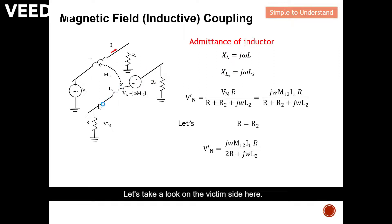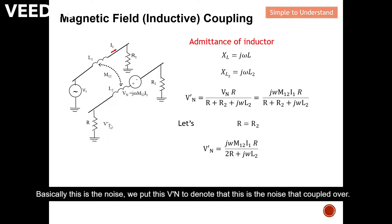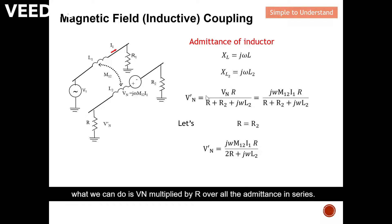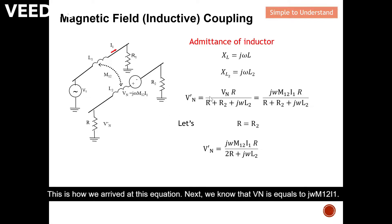Let's take a look at the victim side. This is the noise coupled over from conductor one to conductor two — we denote it V-prime-n to indicate this is the noise that has coupled over. These are all in series, and if we want to find the voltage drop on V-prime-n, we can use the voltage divider rule. The source is Vn, and V-prime-n equals Vn multiplied by R over all the impedances in series, which includes R2 and the impedance of inductor L2.